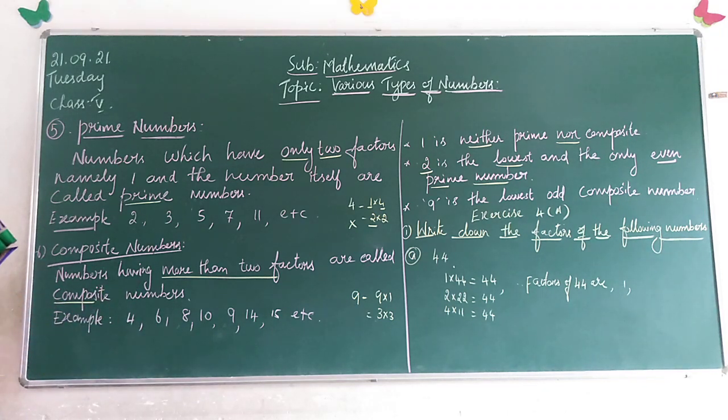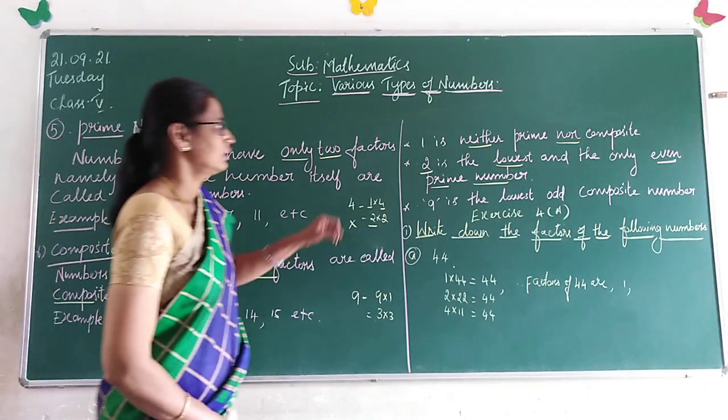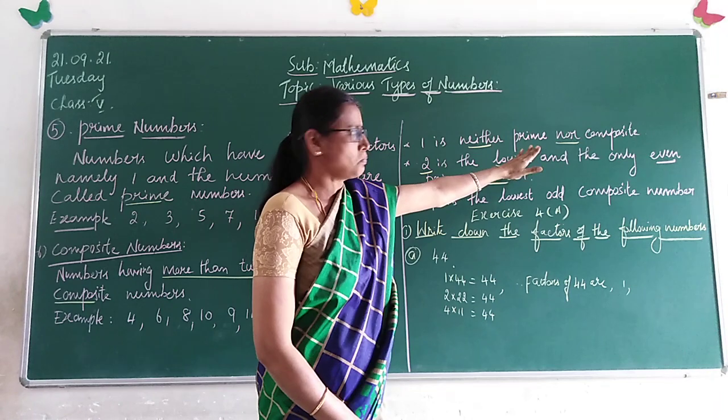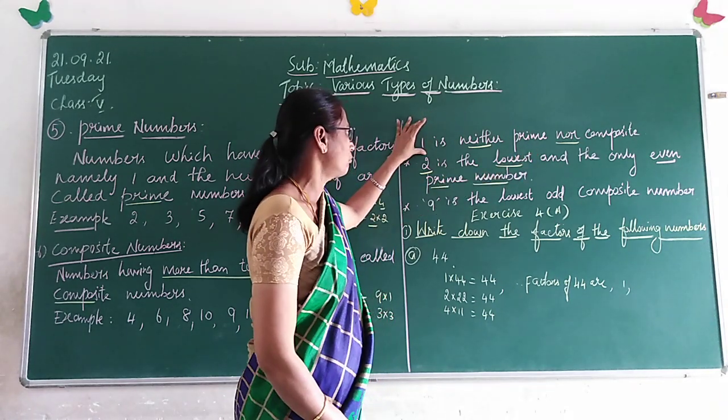Children, what about 1? The number 1 is neither a prime number nor a composite number. Children, this is a special number.